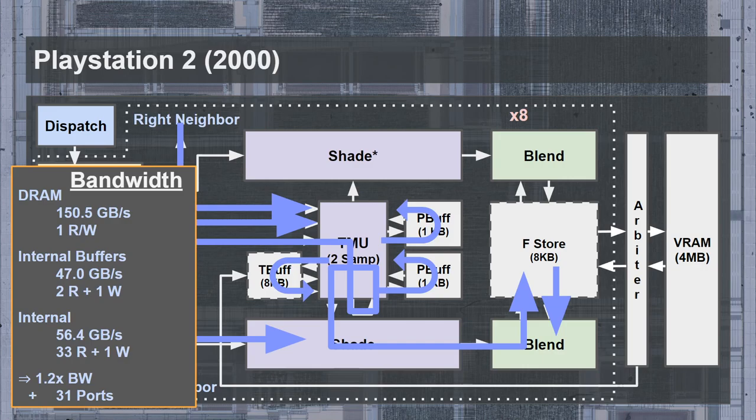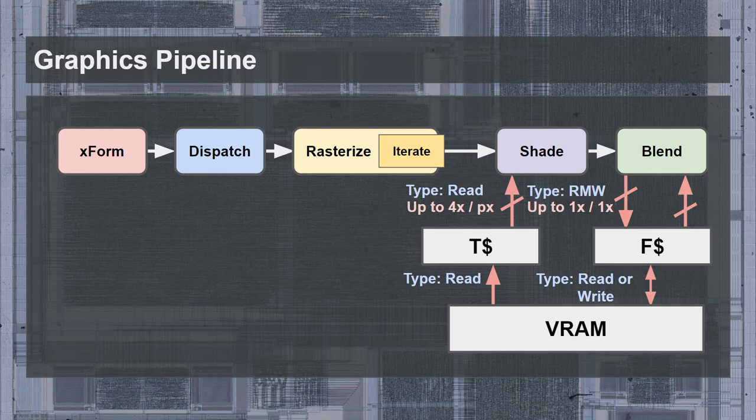We can also calculate the internal memory bandwidth, increased by the inclusion of the palette buffers for a total of 56.4 GB per second spread over substantially more read ports. This GPU represented the extreme of simpler fixed-function rendering pipelines, which could only be further improved through more intelligent architectures that allowed for better hiding of video memory access latencies. That leads us into the PowerVR GPUs, including the Dreamcast, which used a more intelligent — though significantly more complex — memory architecture.